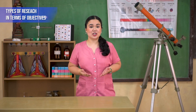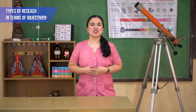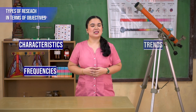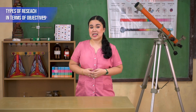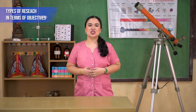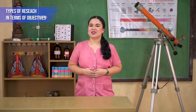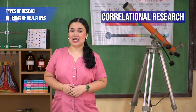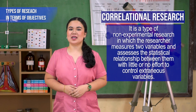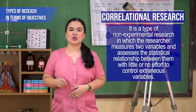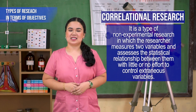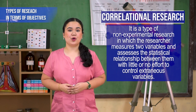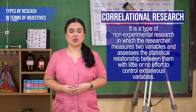Descriptive research is an appropriate choice when the research aim is to identify characteristics, frequencies, trends, and categories. It is useful when not much is known yet about the topic or the problem. Next is correlational research — a type of non-experimental research in which the researcher measures two variables and assesses the statistical relationship between them with little or no effort to control extraneous variables.